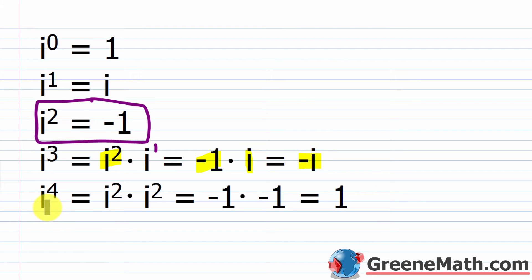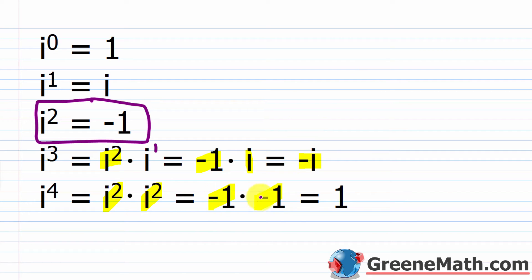For i to the fourth power, we break it up as i squared times i squared. Rules of exponents: i stays the same, two plus two is four. We know i squared by definition is negative one, so we replace it in each case: negative one times negative one is positive one. So the four powers to memorize are: i to the first power is i, i squared is negative one, i cubed is negative i, and i to the fourth power is one.